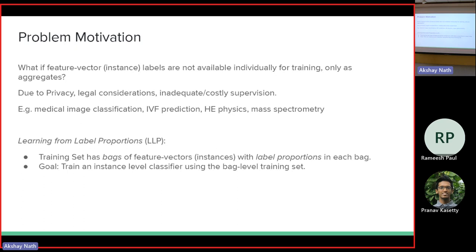There are also applications in IVF prediction where you have a bunch of cells and you only know the aggregate outcome of those cells, but not the individual outcome. This area of learning is called learning from label proportions. Because you now have the sum or average label — knowing the average is the same as knowing the sum of labels, since you know the number of feature vectors.